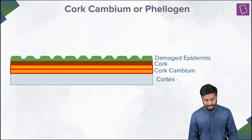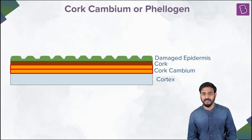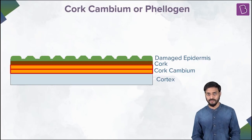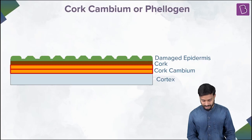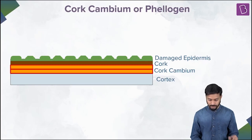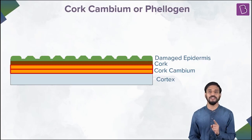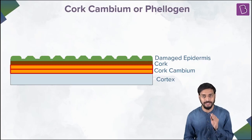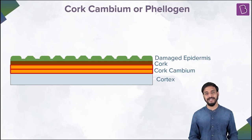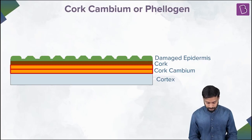The cork is special because it's impervious to water. It is impervious to water because of the suberin deposits which it has.